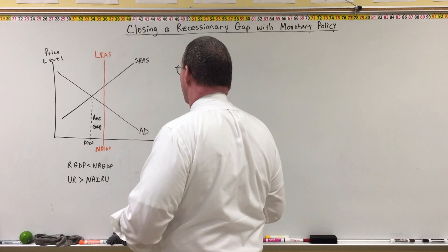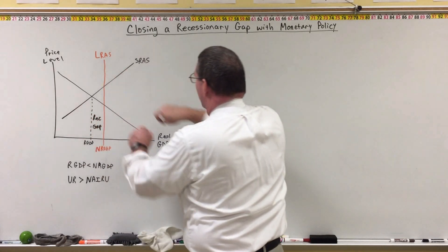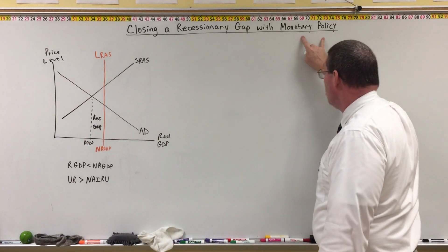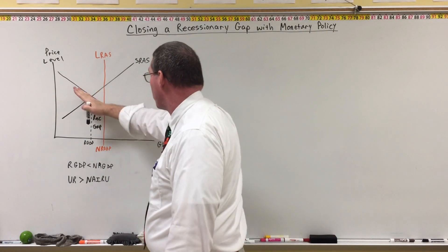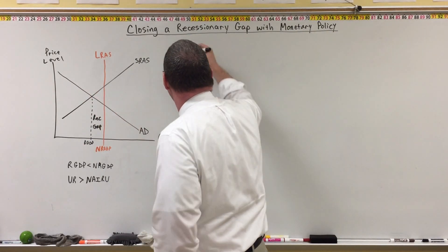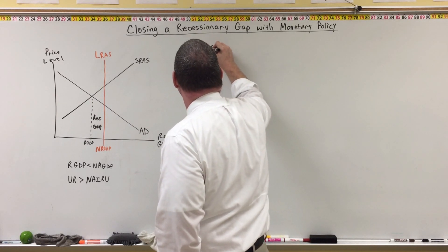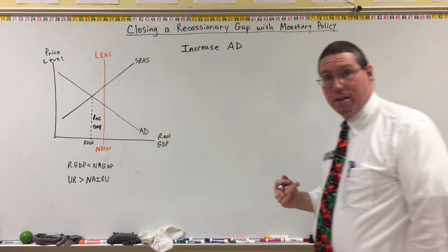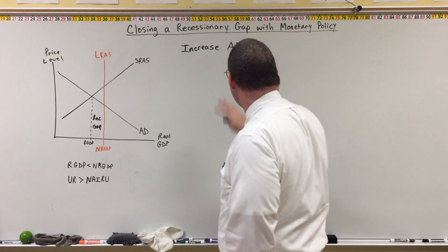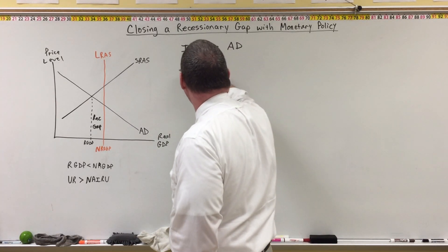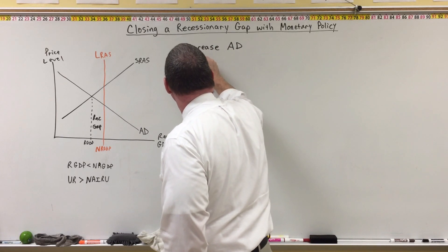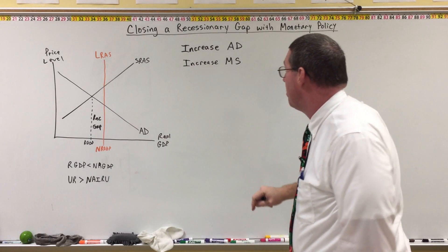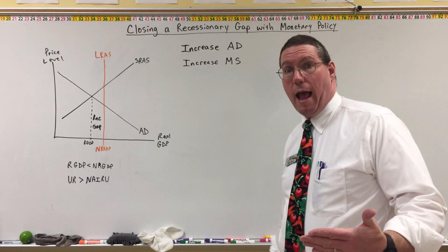In order to close the recessionary gap, we either need to increase short run aggregate supply or increase aggregate demand. Monetary policy tools do not work through aggregate supply — they work through aggregate demand. So what we're trying to do is increase aggregate demand. And what we saw in the previous lesson is that increasing aggregate demand requires an increase in the money supply. So the Fed's thinking is: we need to increase the money supply, because the end result will be an increase in aggregate demand.